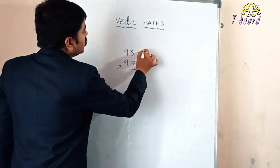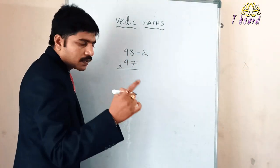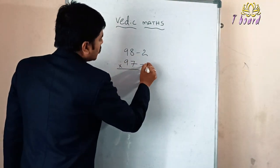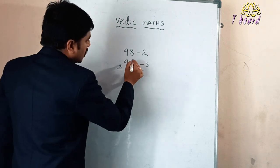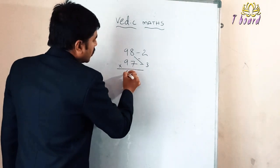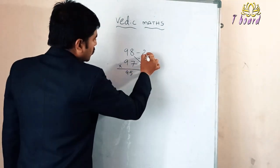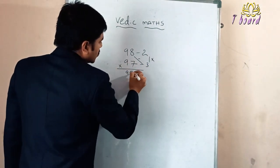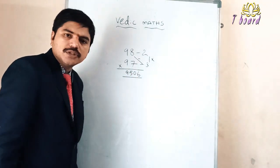Traditional mathematical calculation takes some time. But Vedic mathematics, within one step or within fraction of seconds we can do it. See here, 2 is left from 100, and 3 is left from 100. Then see here, this is 98 minus 3 means 95. 2 times 3 is 6.